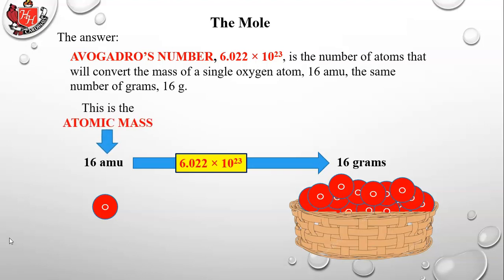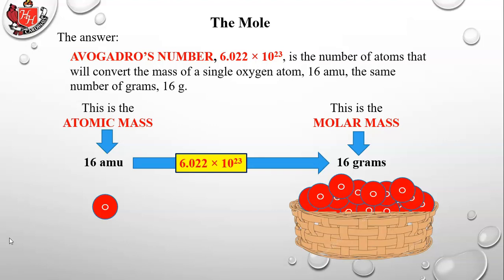When expressed in amu, that value is called the atomic mass. When expressed in grams per mole, it's called the molar mass — the mass of a mole of some substance. That's a term you want to get used to.